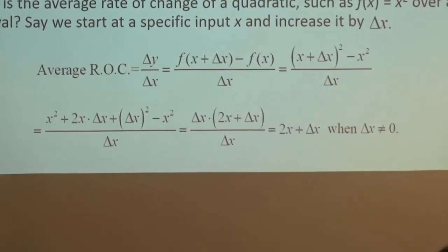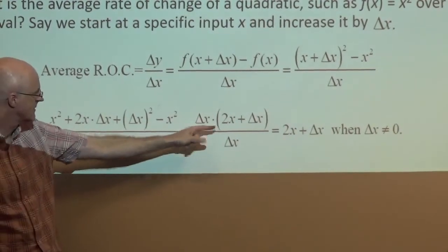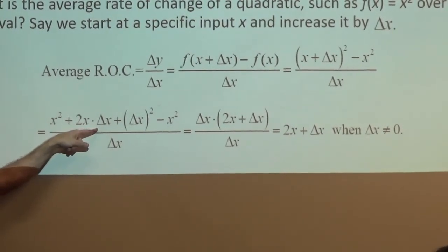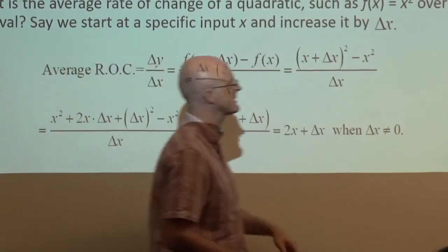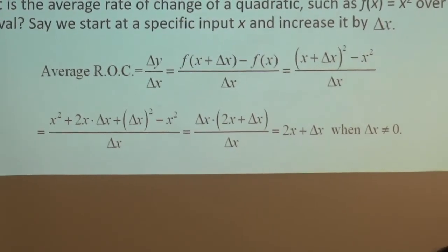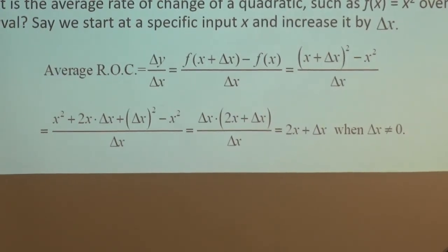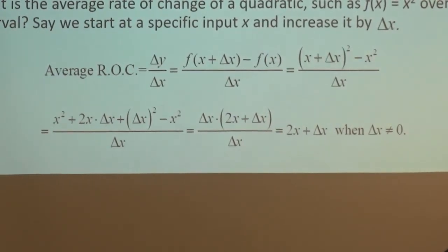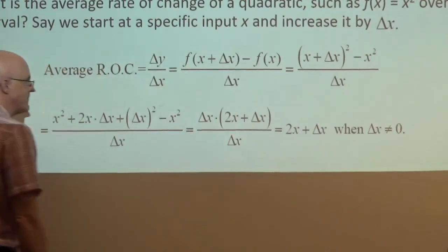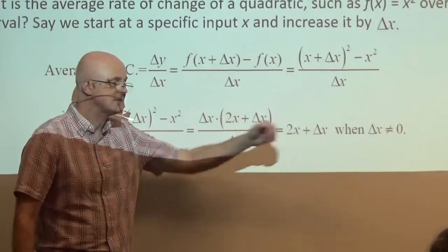When you simplify using FOIL — (x + Δx)² = x² + 2x·Δx + (Δx)² — then subtract x², you cancel the x² terms. What's left on top: each term has a factor of Δx that can be factored out, giving Δx(2x + Δx) divided by Δx. Note that the outside and inside terms of FOIL are both x times Δx, giving two x·Δx terms being added. Then divide out the Δx's — it simplifies to 2x + Δx, at least when Δx is non-zero.